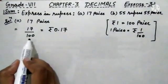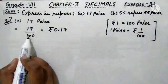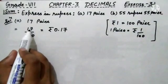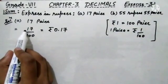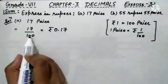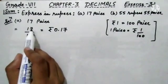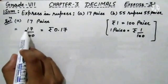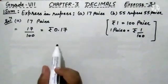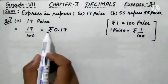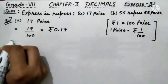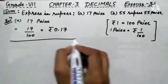We are dividing by 100 because we are converting the smallest term into the biggest term. This can be written as rupees 0.17. In the denominator, two zeros are given. So in the numerator, we leave two digits after writing the decimal — 7 and 1 — and then place a decimal and write a zero in front. So this is converted into rupees 0.17. This is the solution of first sum, first part.